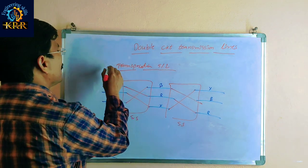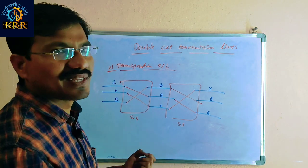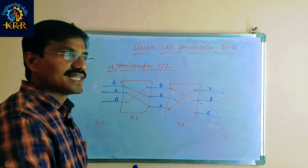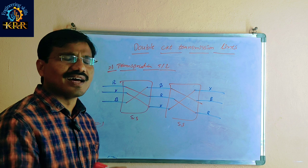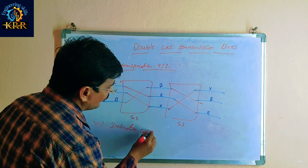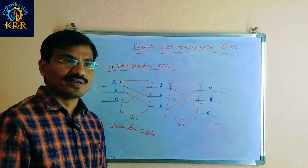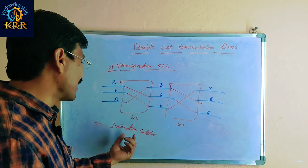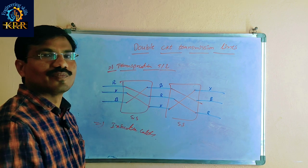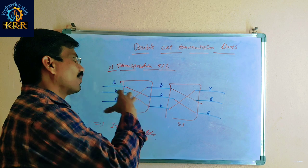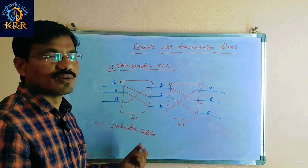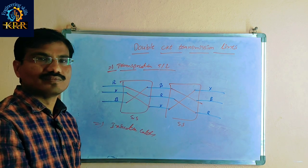Transposition is the technique to overcome the communication interference problem, but this is the older technique. Nowadays, where the transmission line is moving and any nearest communication line is there in that area, we are using insulation cable to overcome that interference of the communication lines. This technique of using insulation cable is very practical — nearest any communication lines are there, use cable to overcome that problem. This is the modern technique we are using today.